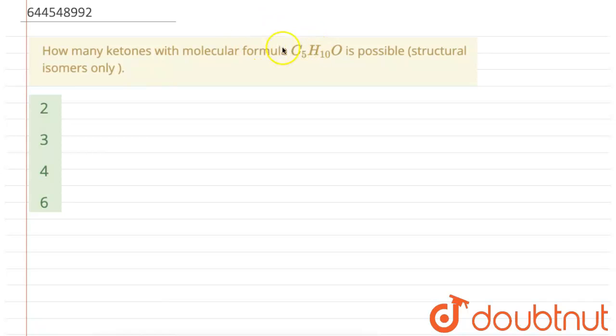Here we are provided with a molecular formula C5H10O, and we need to find how many ketones are possible with this molecular formula if we are writing the structural isomers only. Let's start with the first compound.